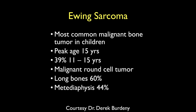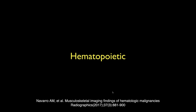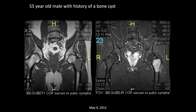This is the most common malignant bone tumor in children. Peak age is around 15 years — tends to occur in the early teens. It's a malignant round cell tumor, 60% in long bones, and 44% in the metadiaphysis.